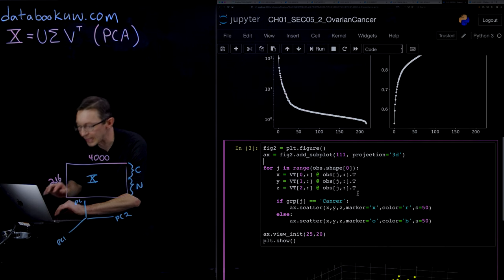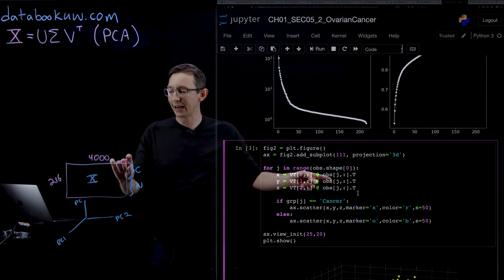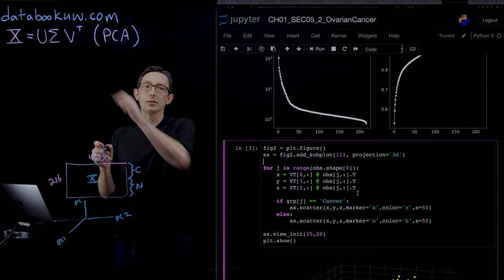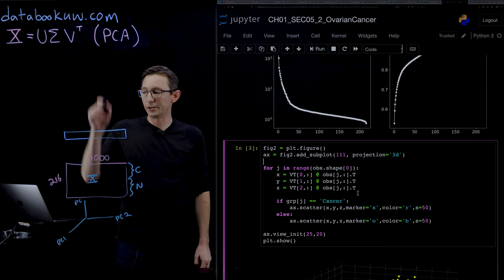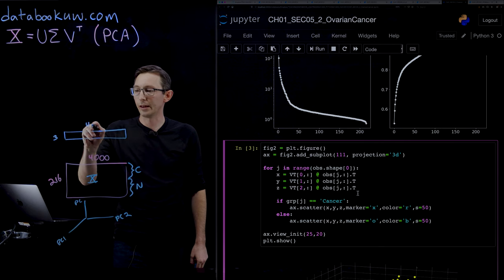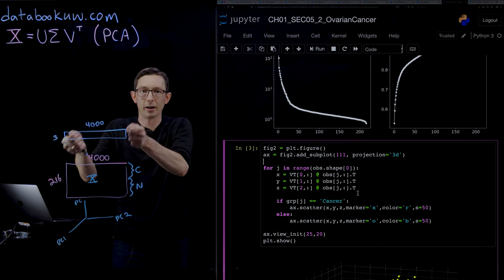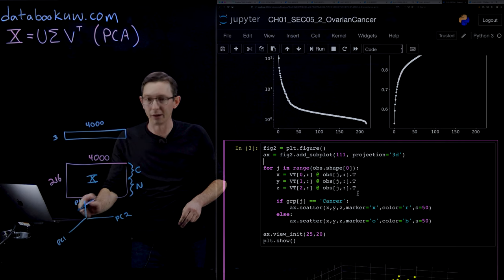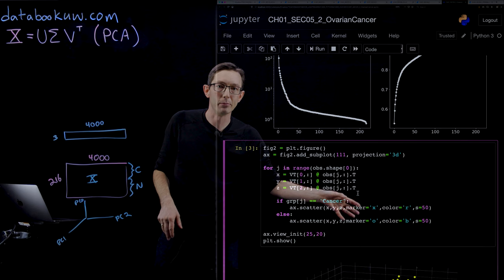Now what we're going to do is take our observation matrix, this X matrix, and project it into the first three principal components. I'm going to take these first three rows of V transpose—v1, v2, v3—so this is a 3 by 4,000. For every patient, I'm just going to take their genetic sequence and take the dot product with these three rows, and I'm going to get three numbers out. Those three numbers are what I'm going to plot in these principal component 1, 2, and 3, with different symbols for the patients with cancer and without cancer based on their group.